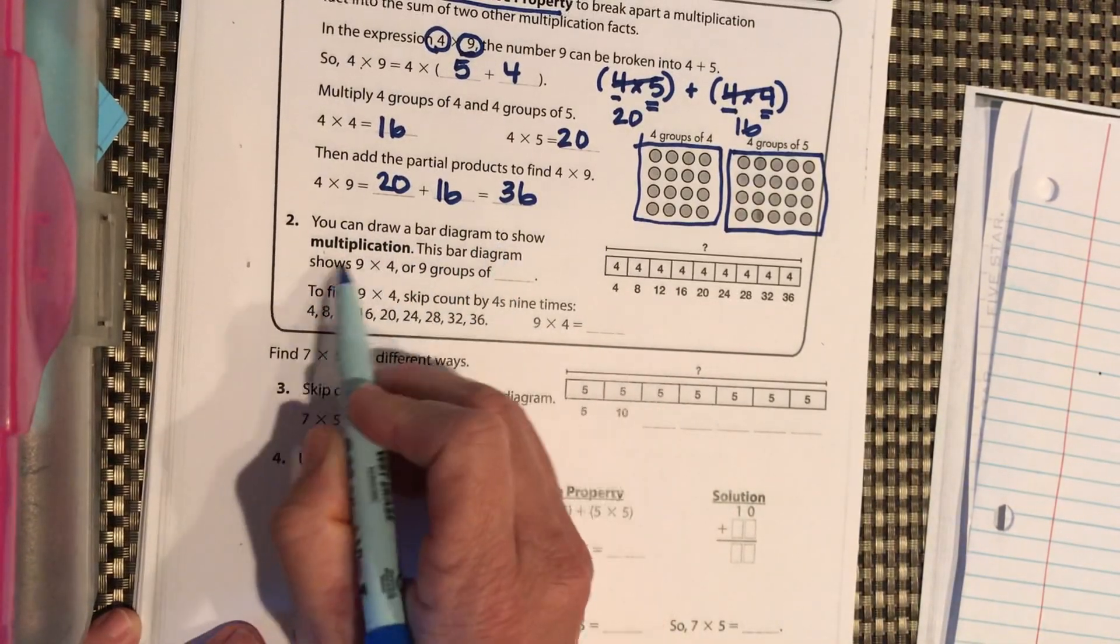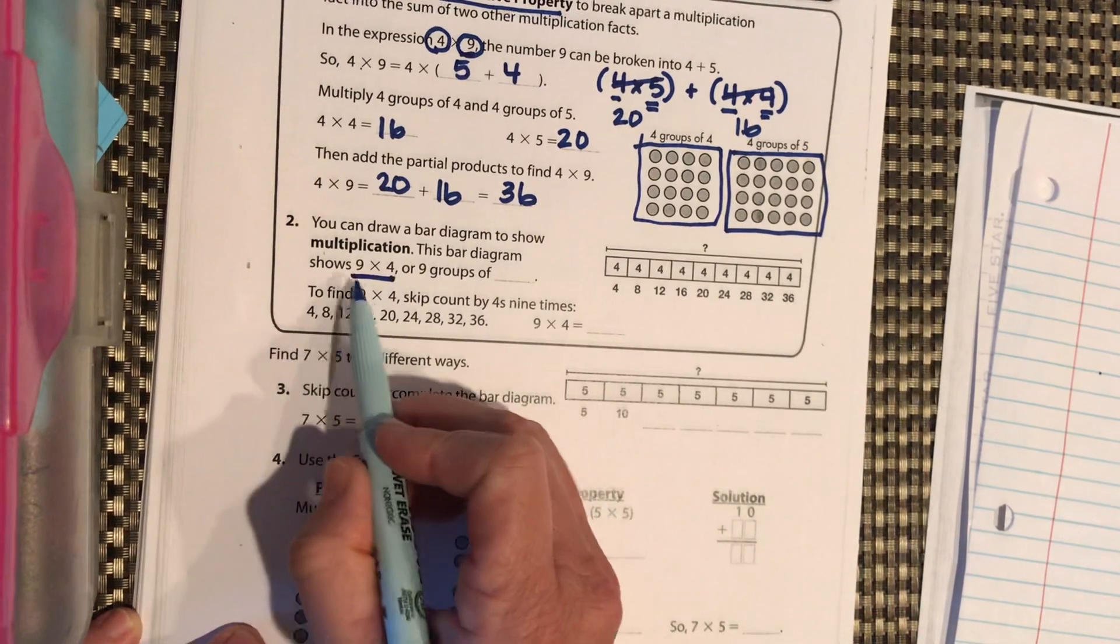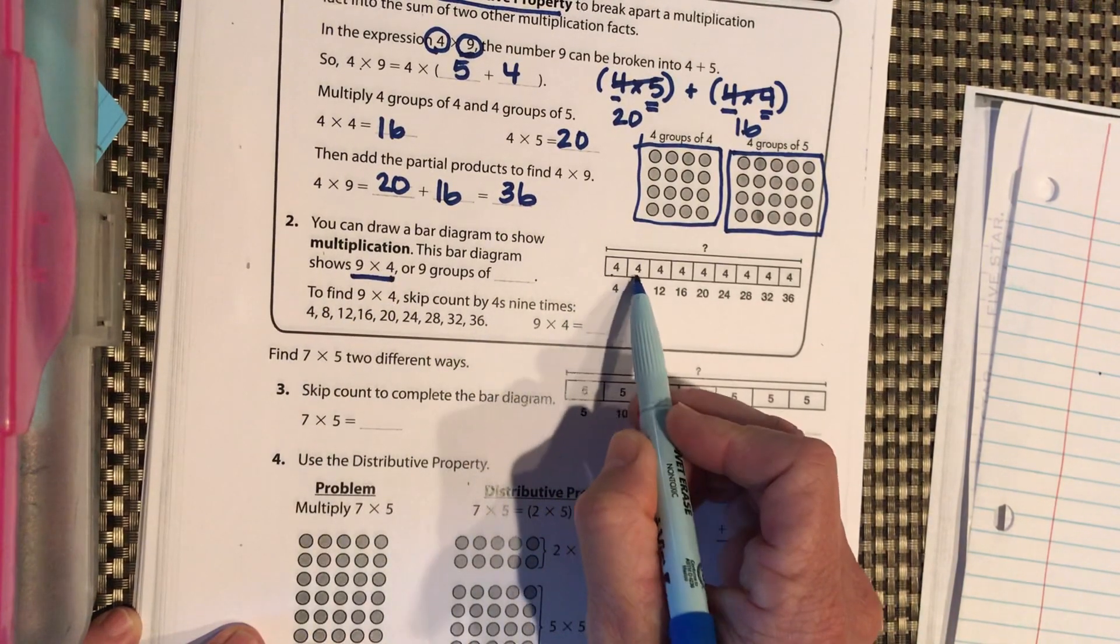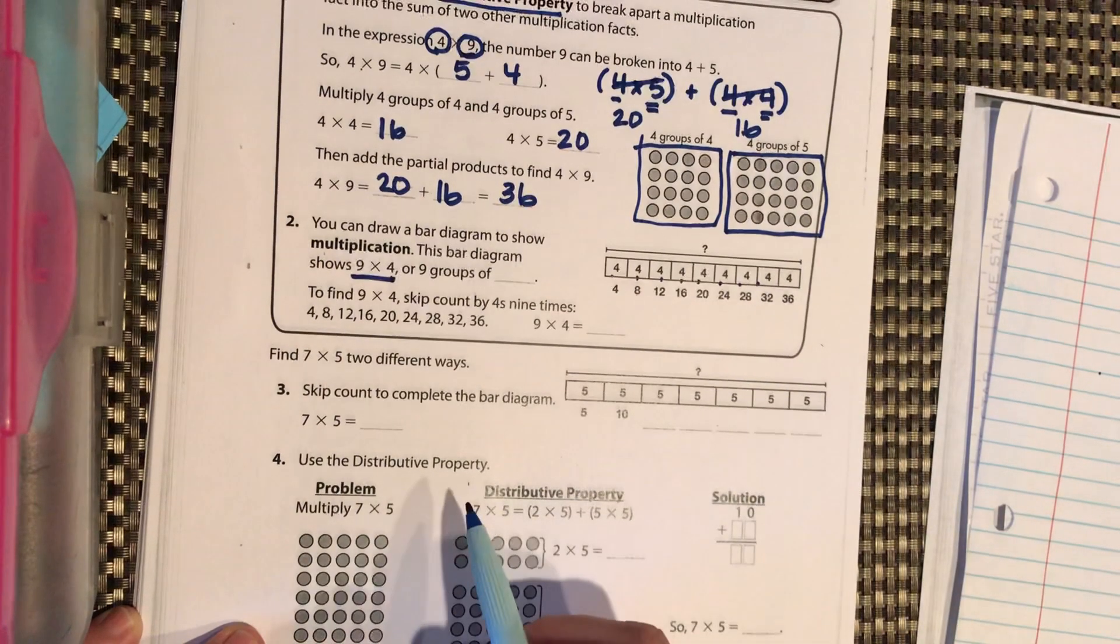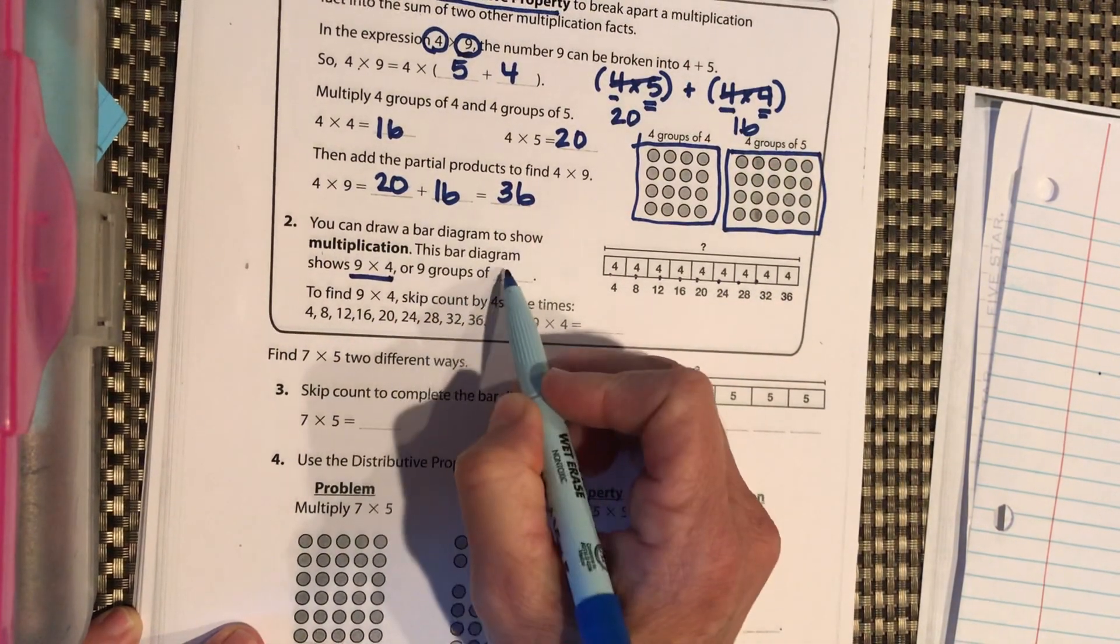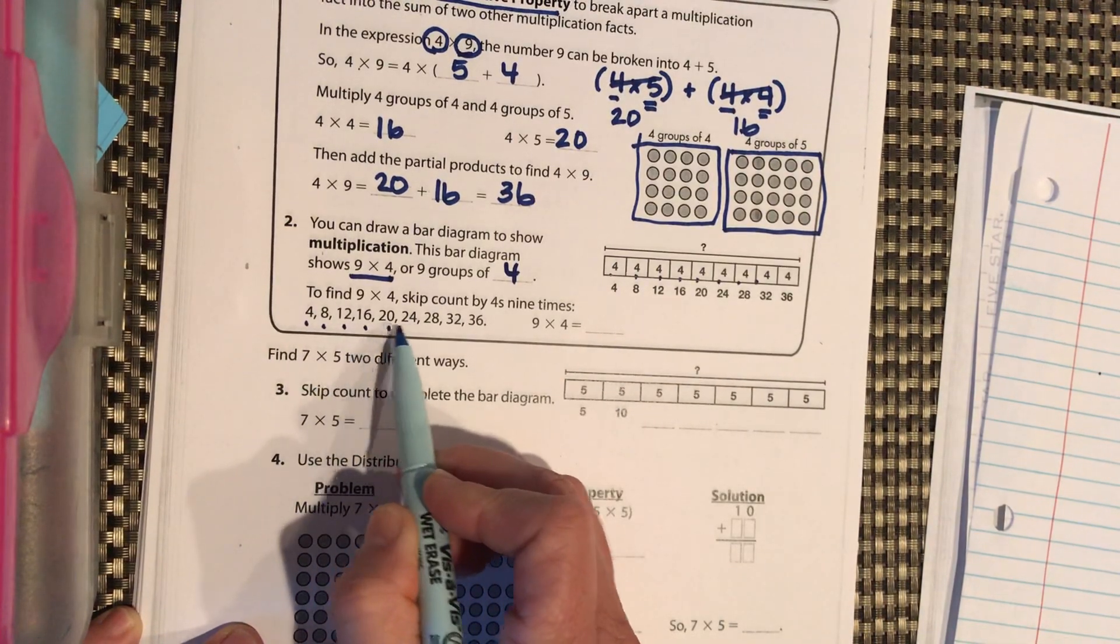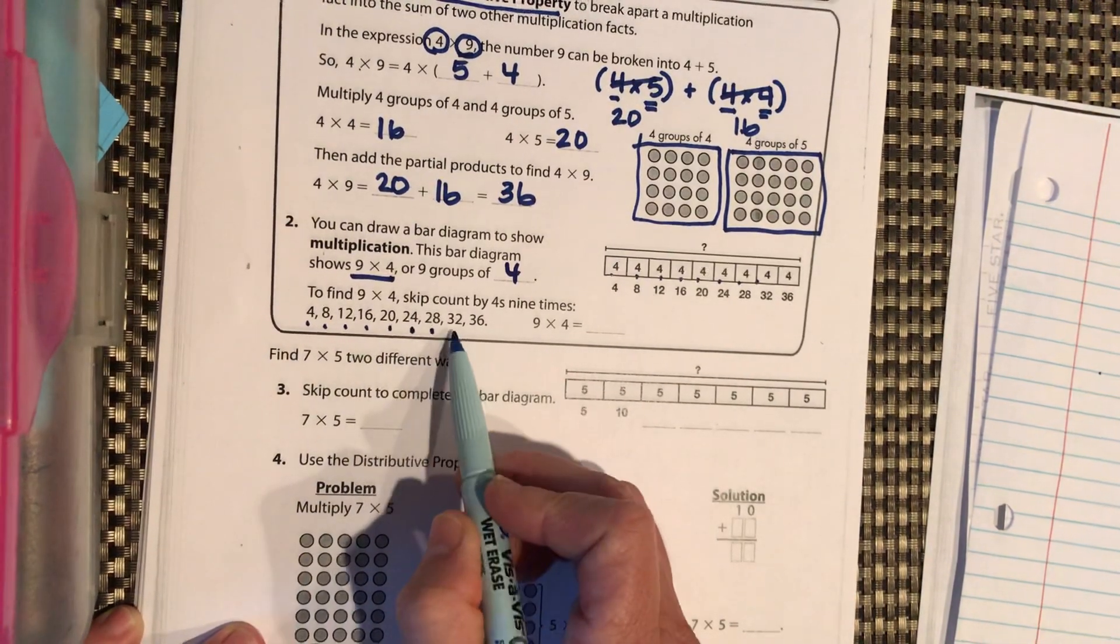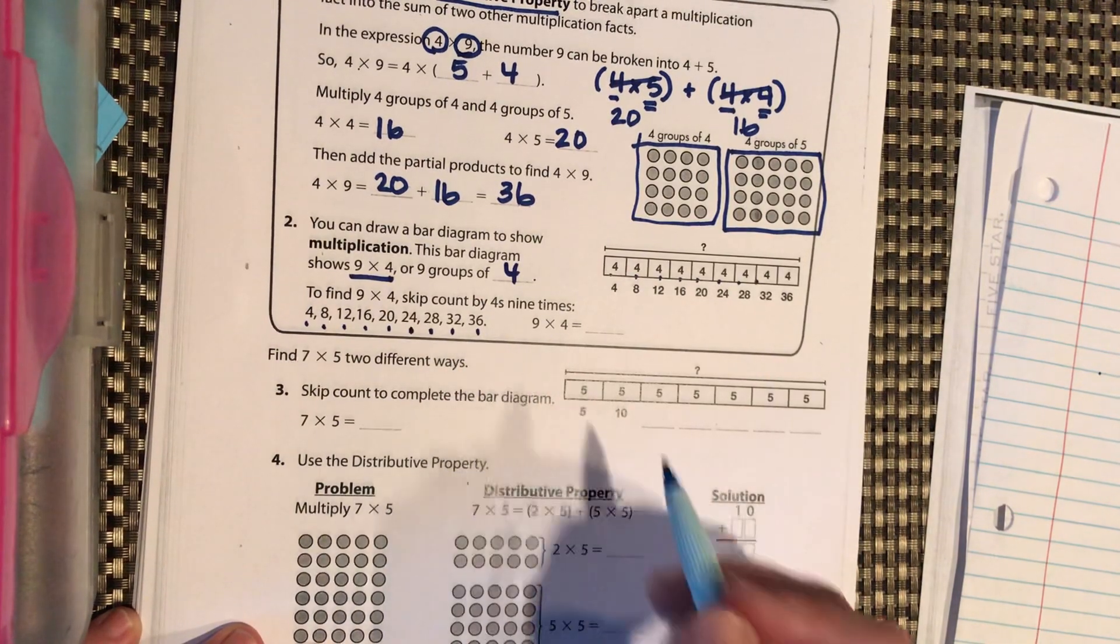Okay, you can draw a bar diagram to show multiplication. So this bar diagram, we're using the same multiplication problem, 9 times 4. So we have 9 groups of 4. So we can skip count by 4. We have 9 groups of 4. We can skip count by 4. 4, 8, 12, 16, 20, 24, 28, 32, 36, and 40.